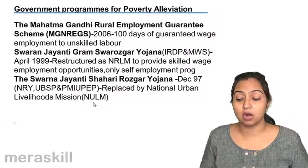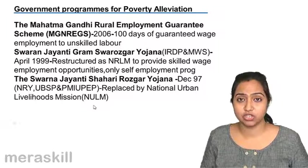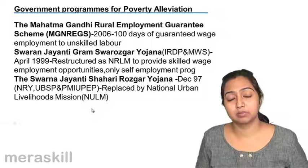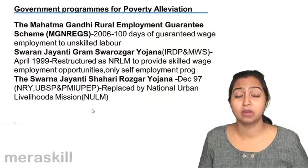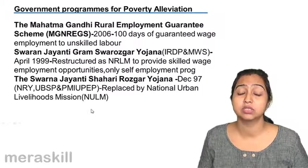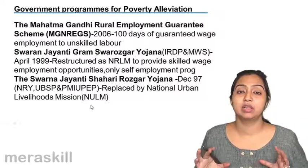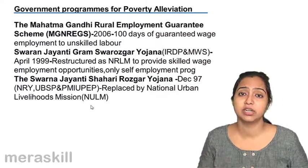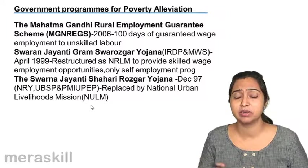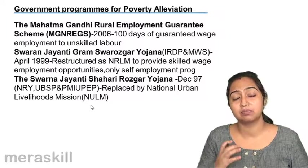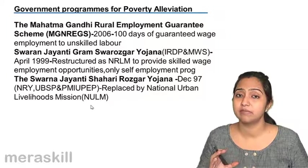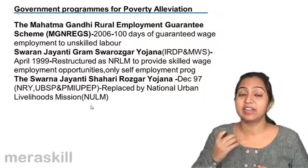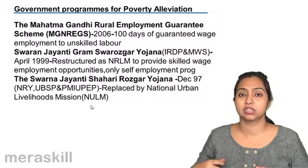Government over the years has made a lot of programs for poverty alleviation, for removing poverty in our country. Initially, when the five-year plans were made, not much emphasis was given because it was supposed that if we give more stress on the development of the country, if we establish more industries, people will get employment, they'll have income and then the problem of poverty will automatically be solved. But something like this has not happened. The economy has grown, but the effect has not trickled down to the lower section of the society.